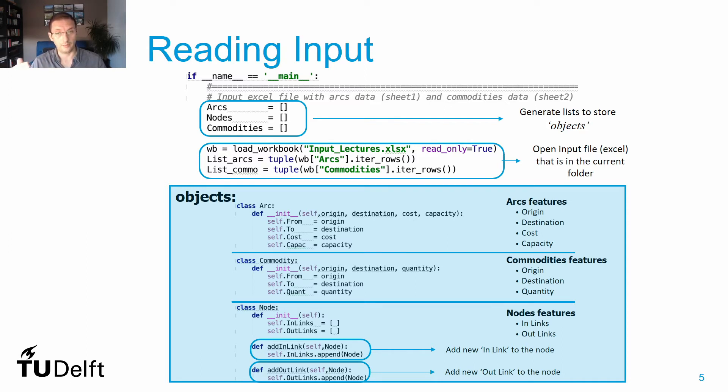What we see there in the box is a definition of all these objects, also in the code. The arcs are defined according to four features: origin, destination, cost, and capacity. The commodities are defined according to three features: origin, destination, and quantity. And the nodes are defined according to two features and two functions—the two features are the in-links and out-links, which refer to the arcs that get into the node and out of the node respectively, and the functions make this relation between a new arc that we generate as an object and information of the in-links and out-links of this node.